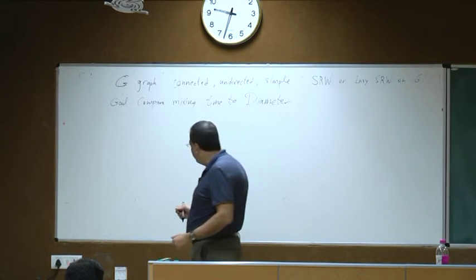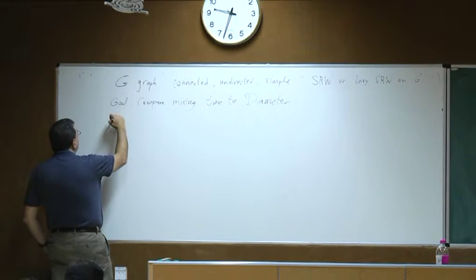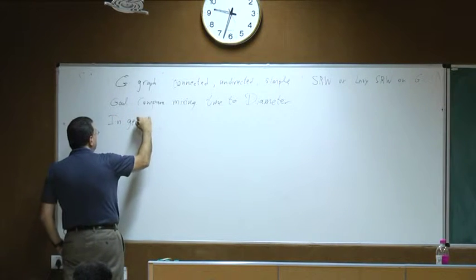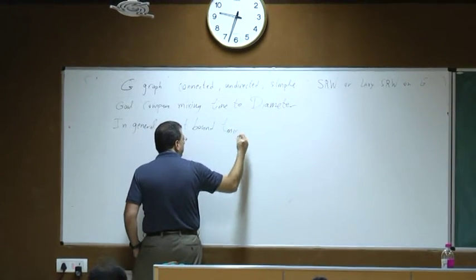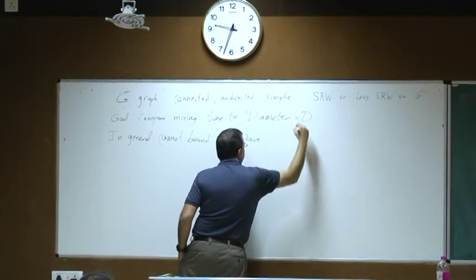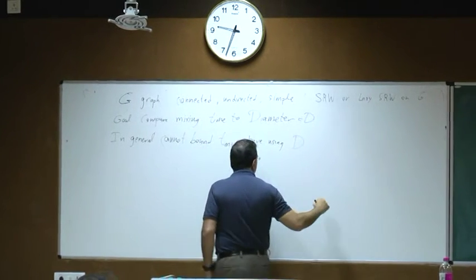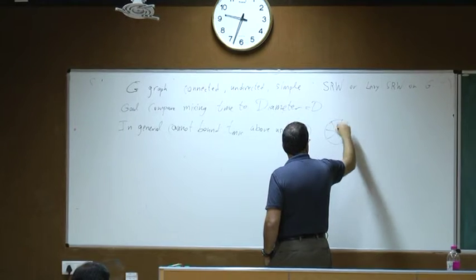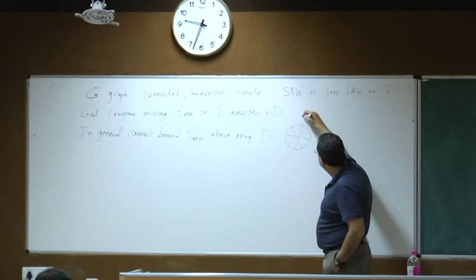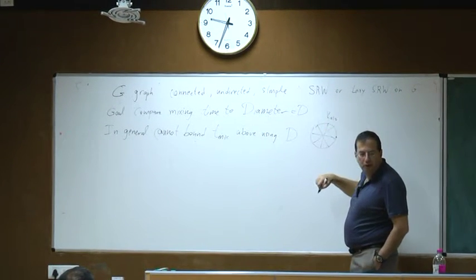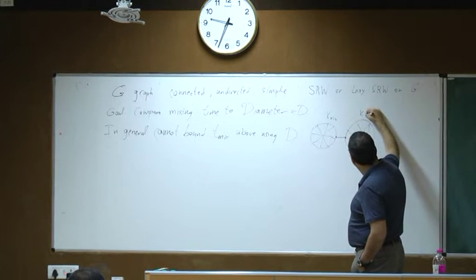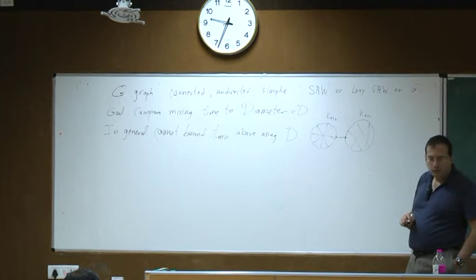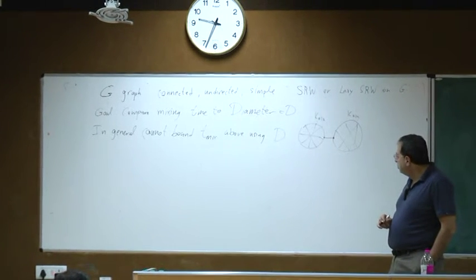We want to see how the diameter relates to the mixing time. In general, without conditions, you cannot bound the mixing time from above by the diameter — we'll denote the diameter by D. For example, here is a complete graph on N/2 nodes, and here is another copy of a complete graph on N/2 nodes, and we connect two of these nodes by a single edge. Then the mixing time will be of order N squared, yet the diameter of this graph is just 3.